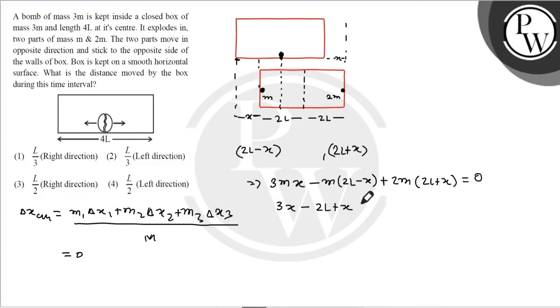This gives us 3X minus 2L plus X plus 4L plus 2X equals zero. Simplifying, 6X plus 2L equals zero, so X equals minus L divided by 3.